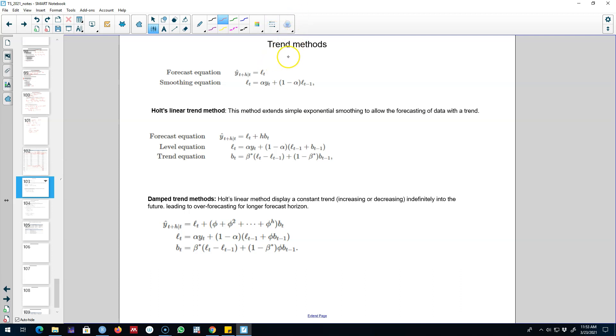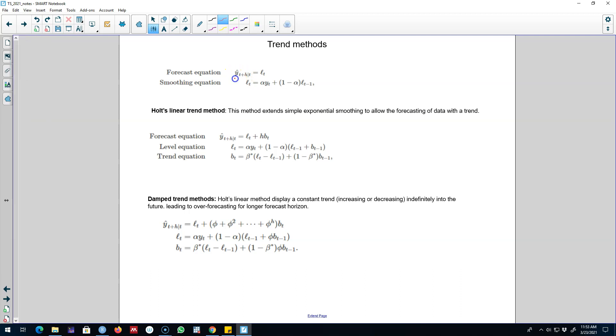In this video, I'm going to introduce a method which allows forecasting of a time series with a trend. Previously we talked about forecasting based on initial state and then using that state to forecast our equation based on the alpha parameter or the smoothing parameter. Now the Holt's linear trend method extends these two equations to include trend in a series.